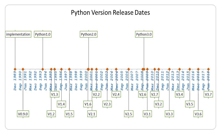Only slight syntax changes are there and you will be able to manage easily in future. Python 2 support will be frozen by 2020. In future, everybody will be using Python 3 only. Some companies are still using Python 2, but eventually everyone will migrate to Python 3.